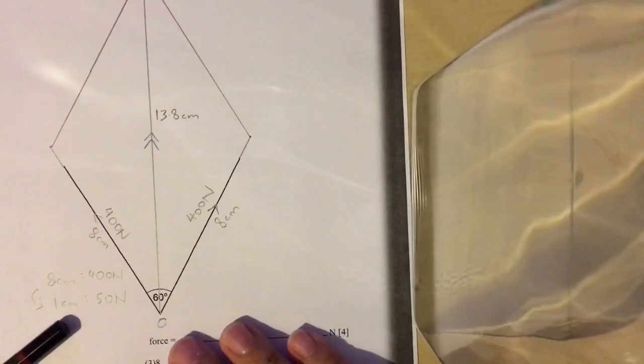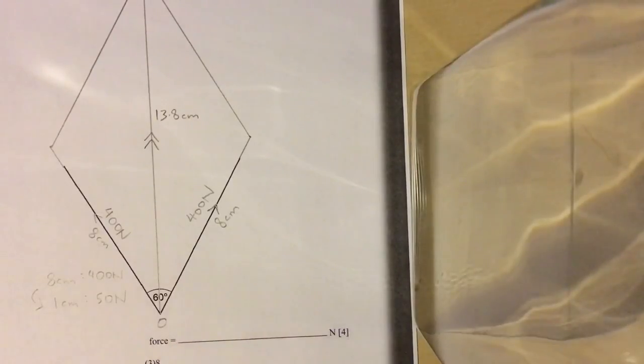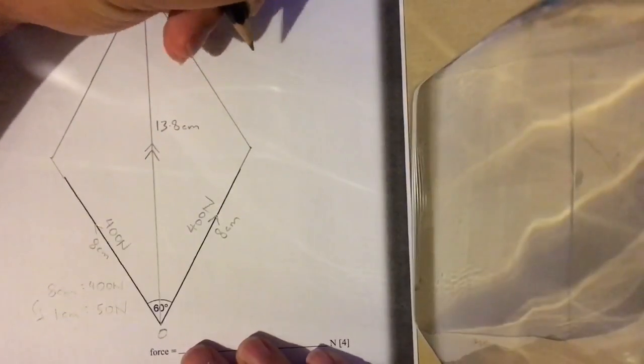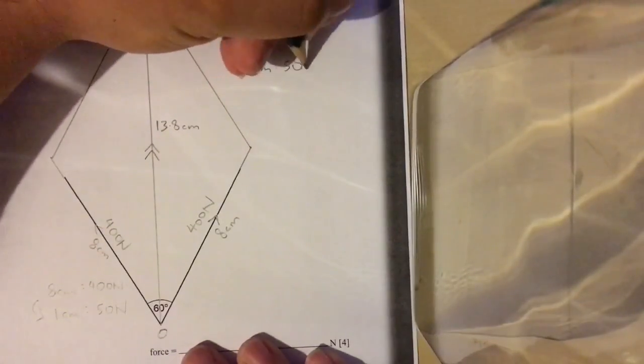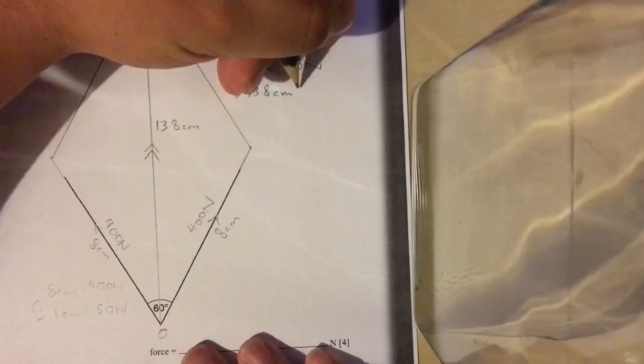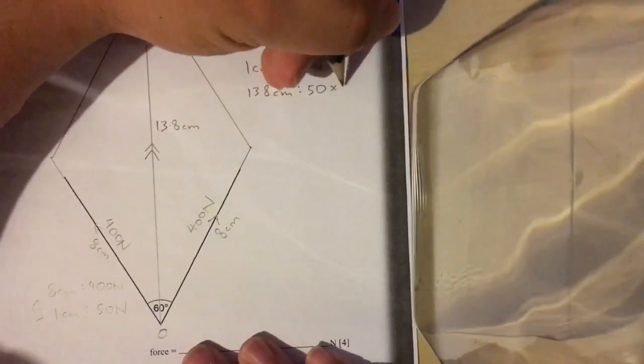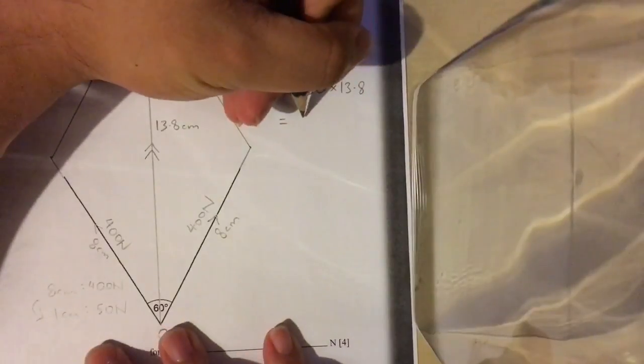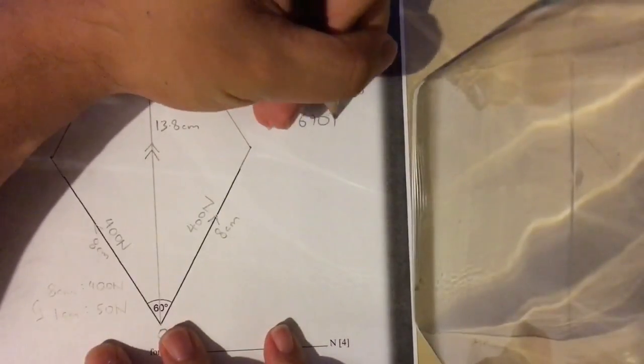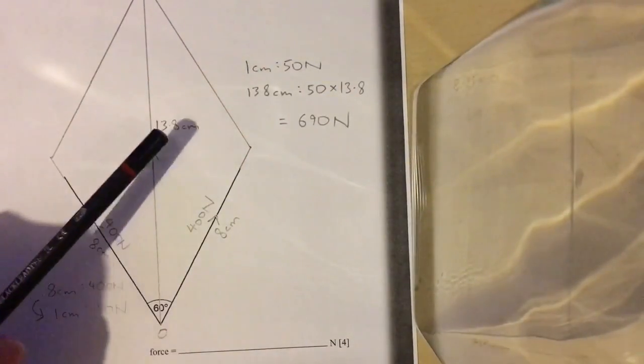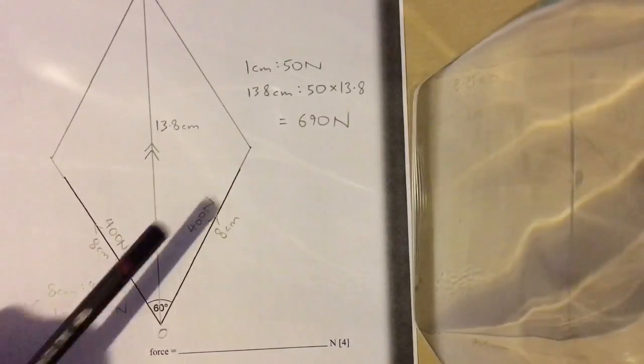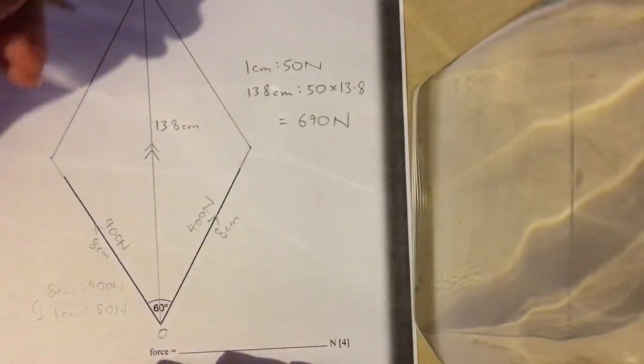Let's go back and check. 1 cm represents 50 newtons. We would use our calculator. What would 13.8 cm represent? 13.8 cm, using the scale that we previously provided, will represent 690 newtons.